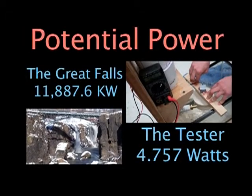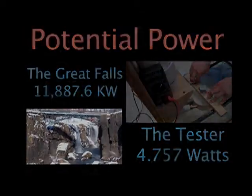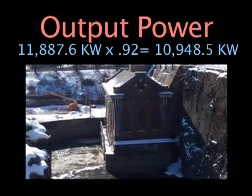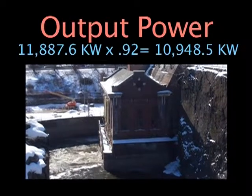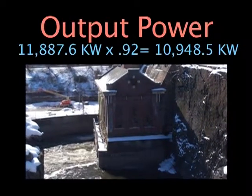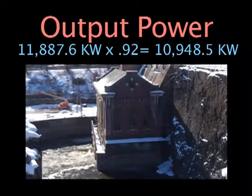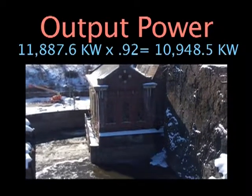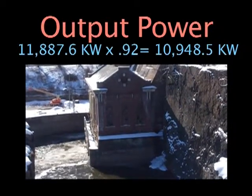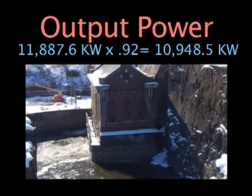The actual output power is less because the system is not 100% efficient. The efficiency of the Great Falls system is 92.1%.